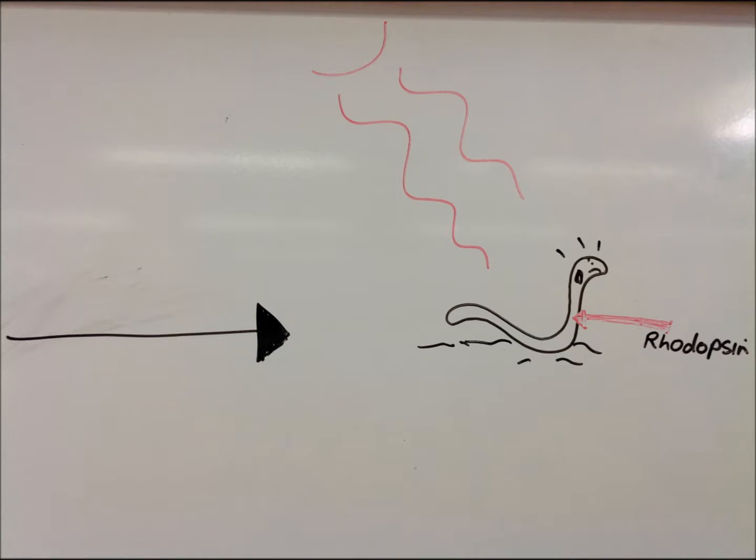In the skin of worms there is a protein complex called rhodopsin. This is a light-absorbing photopigment. This is how a worm detects light.